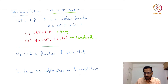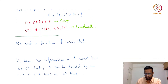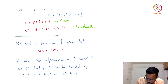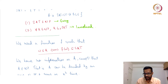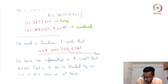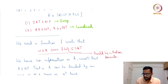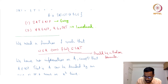We take an arbitrary language A in NP and show it reduces to SAT. We need a reduction function F such that W is in A if and only if F(W) is a satisfiable Boolean formula. This function must also be computable in polynomial time.